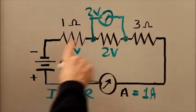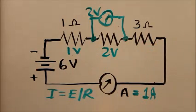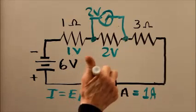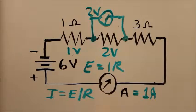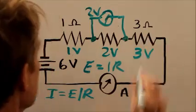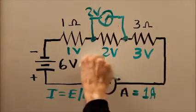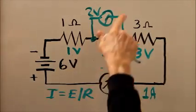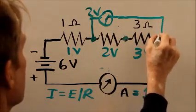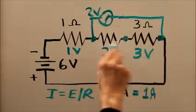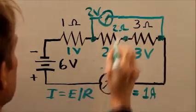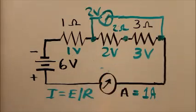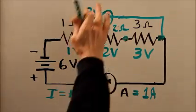For the 3 ohm resistor, 1 amp flows through it, so the voltage E equals the current times the resistance according to Ohm's Law — 1 amp times 3 ohms — that's 3 volts. Now if we were to move the terminal of this meter so that we were measuring the voltage across the combination of the 2 and 3 ohm resistors in series, we'd get 2 plus 3, or 5 volts.